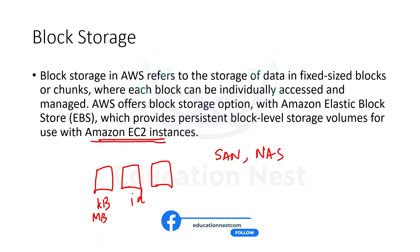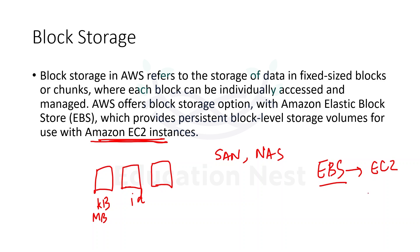For EC2 instances, if we want permanent storage to be attached, we use EBS volumes. These volumes are attached to EC2 instances for persistent block-level storage. AWS defines block storage as storage of data in fixed-size blocks or chunks, and the AWS service for block storage is EBS. Common examples of block storage apart from EBS include HDDs (hard disk drives) and SSDs (solid state drives).